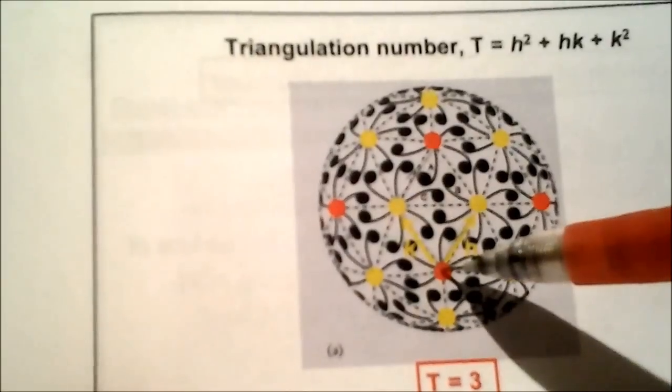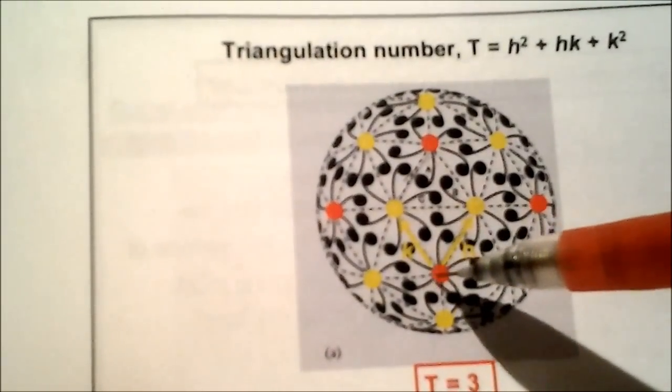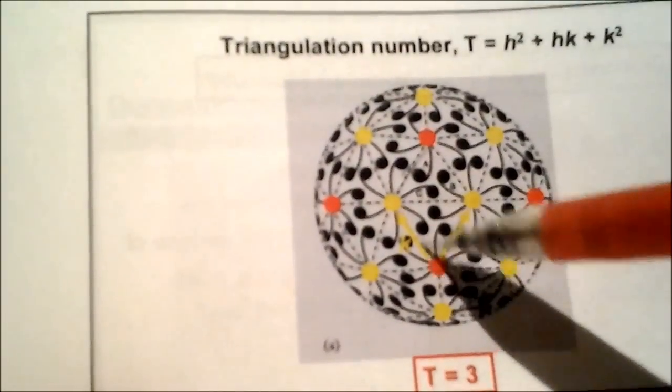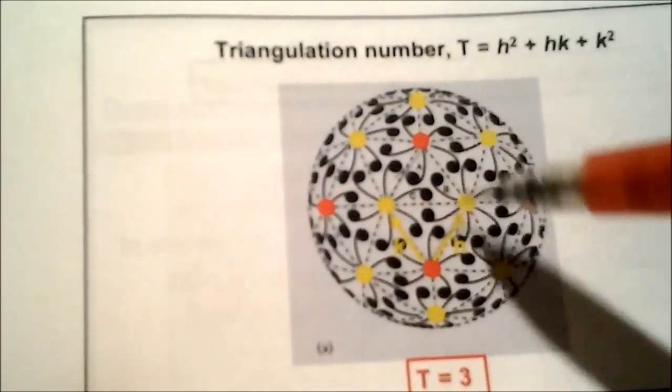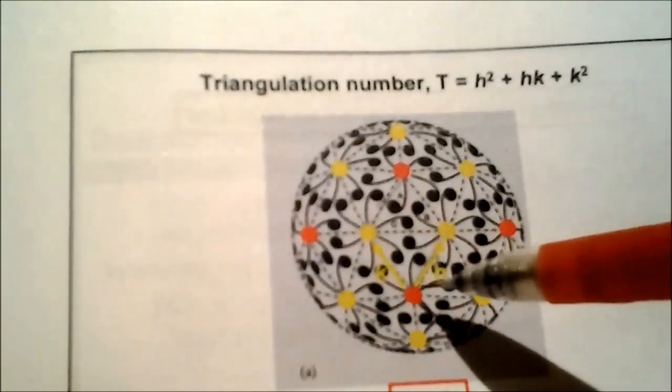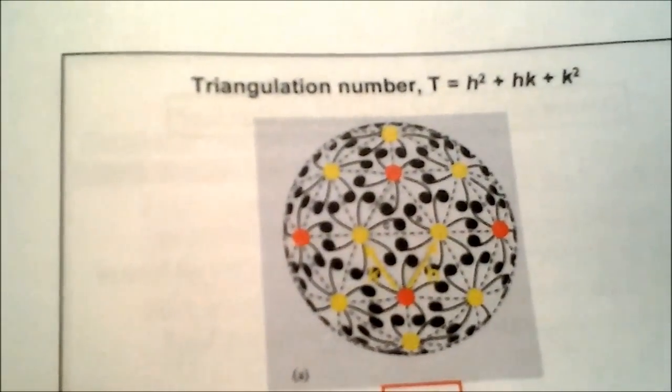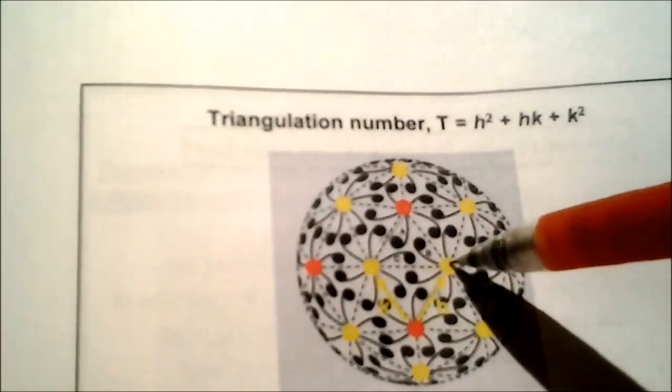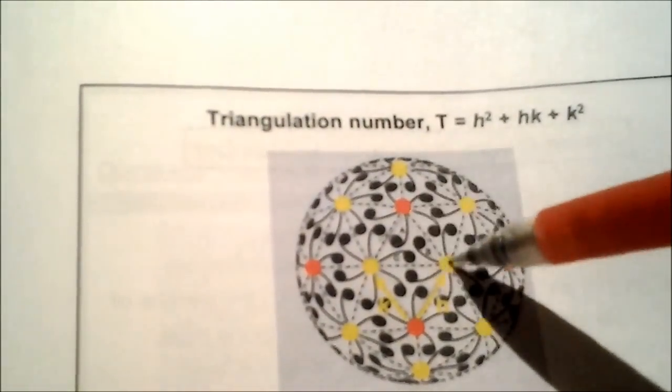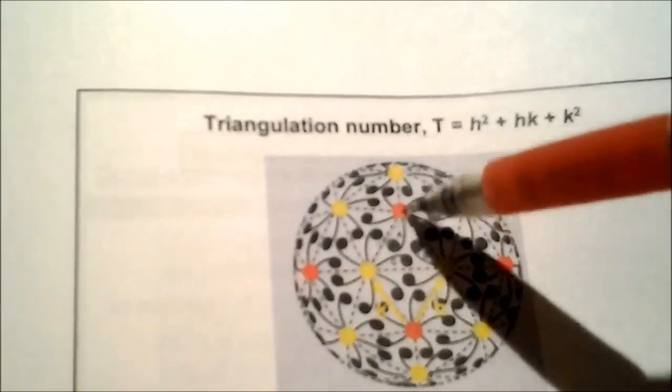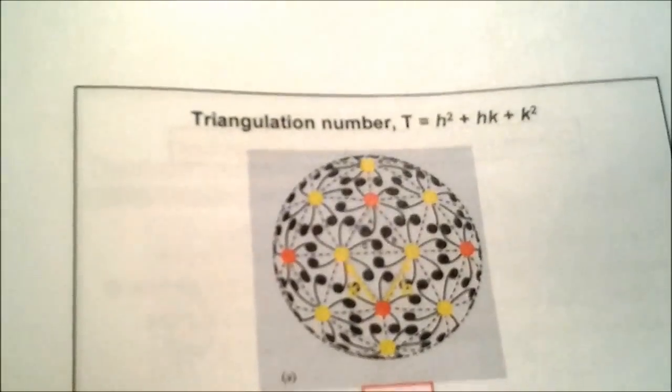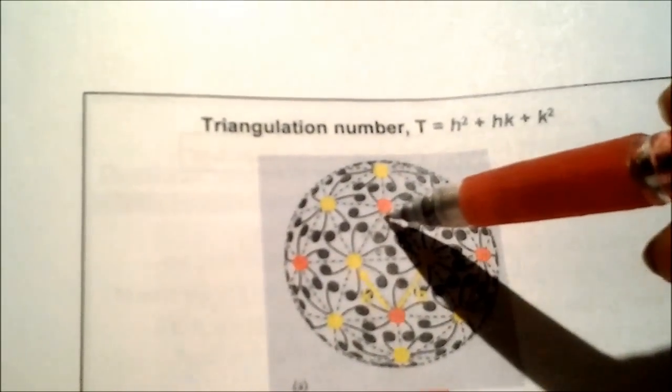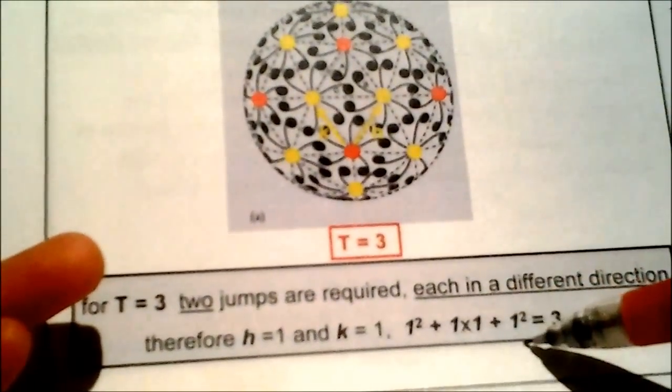Let's say you're calculating it from here to here. h is in this direction and k is in this direction right here. If you look at it, you need two jumps to get to the next point. But h and k are different directions. In this example, you're going h=1 and k=1 because this line here is parallel to this one, so this would be the k. When you substitute that into the formula, you get T=3.